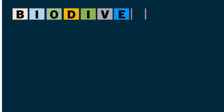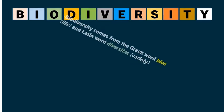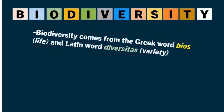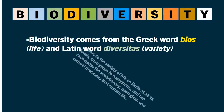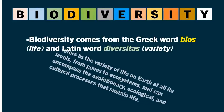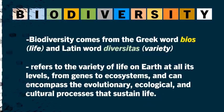Biodiversity comes from the Greek word 'bios', which means life, and the Latin word 'diversitas' meaning variety. It refers to the variety of life on Earth at all its levels, from genes to ecosystems, and can encompass the evolutionary, ecological, and cultural processes that sustain life.